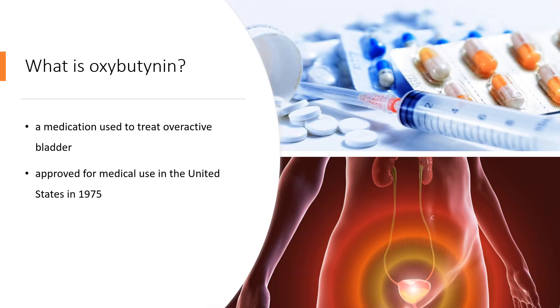What is oxybutynin? Oxybutynin, sold under the brand names Ditropan among others, is a medication used to treat overactive bladder. It works similarly to tolterodine, darifenacin, and solifenacin.